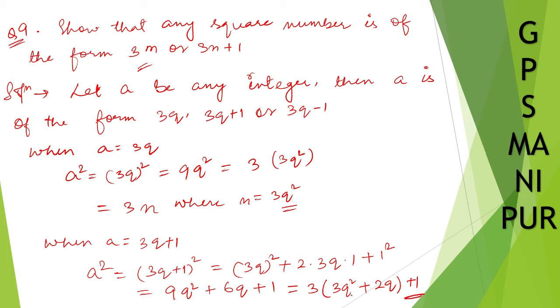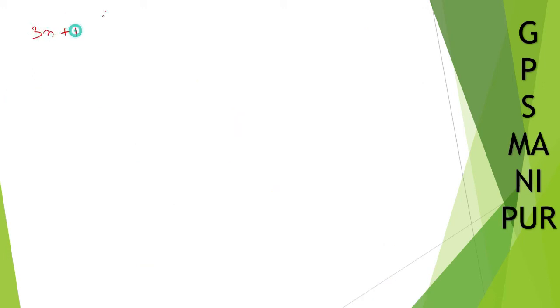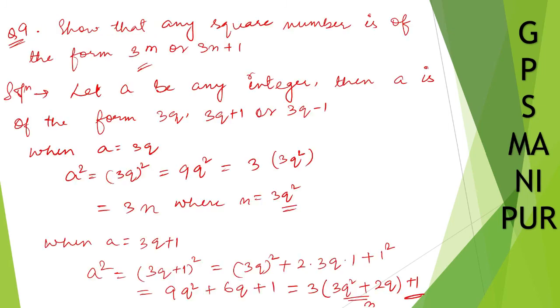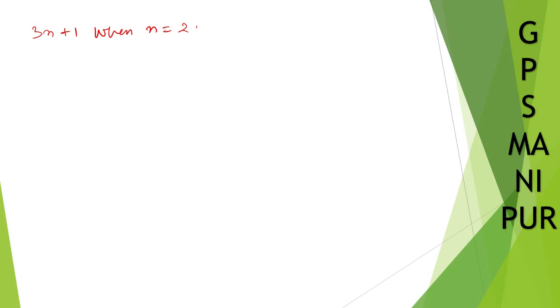So this can be written as 3n plus 1, where n is equal to 3q² plus 2q.